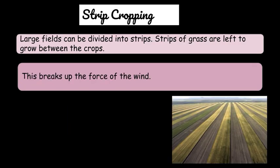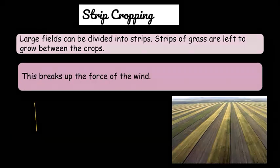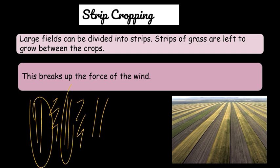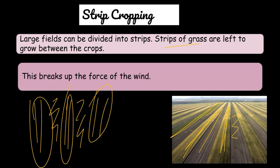Then we have strip cropping. In this method, crops are grown in strips with grass in between. The grass acts as a barrier so that when wind blows, it slows down and reduces soil erosion by wind.